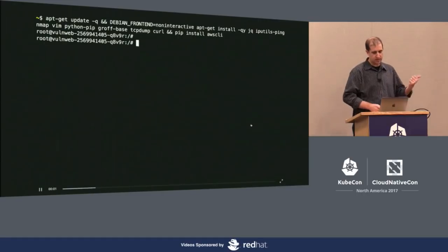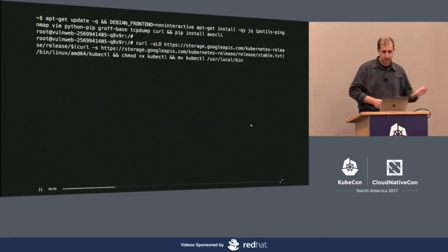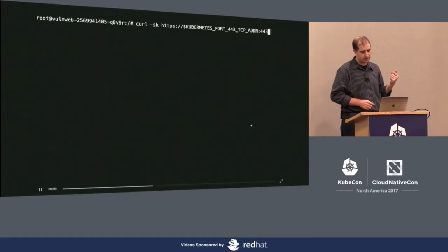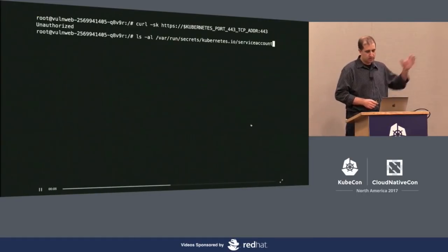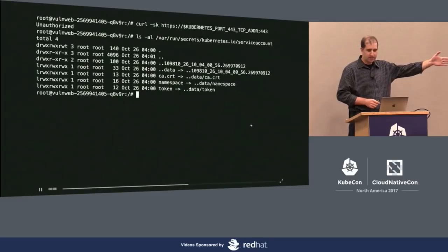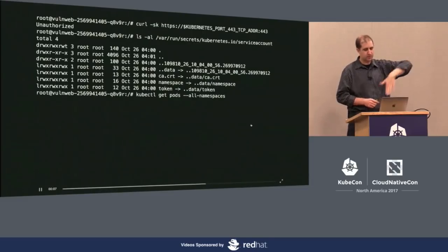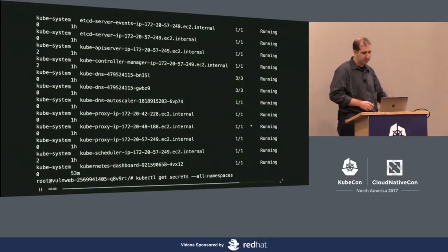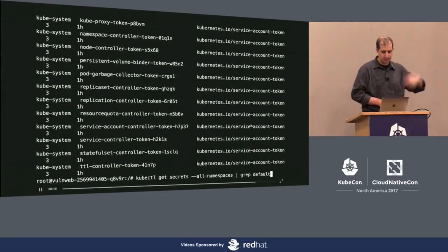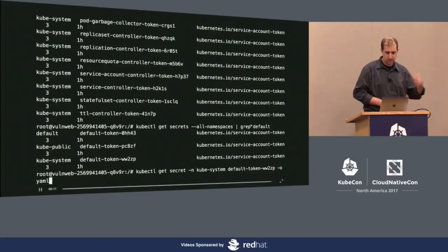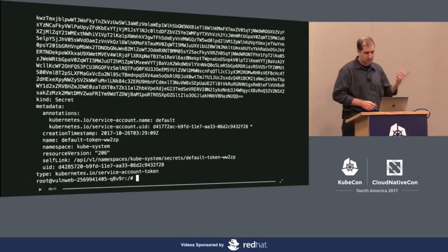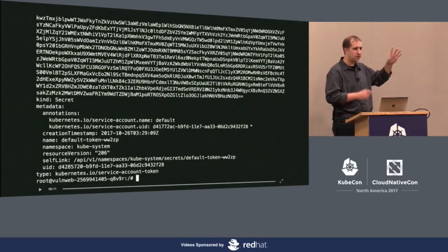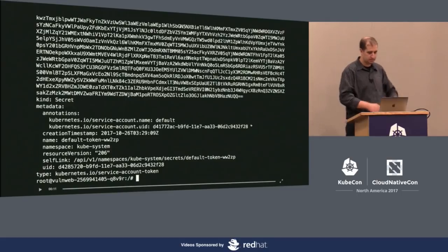We can install tools, download the kubectl binary, validate that we can hit the API — yes, we have the service account token mounted. We can get pods, list all the secrets, look for the good ones, and dump their contents. Four or five curl commands and we've escalated.